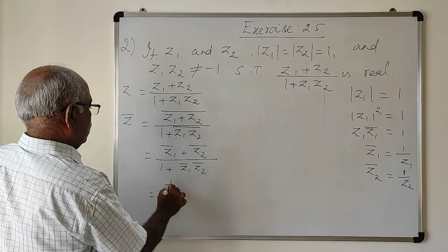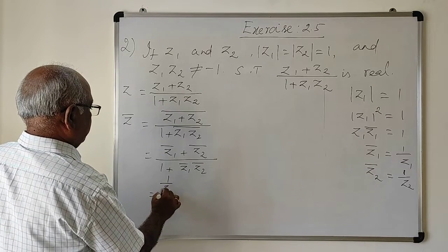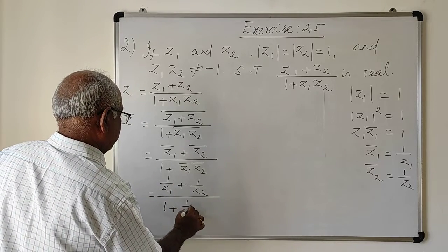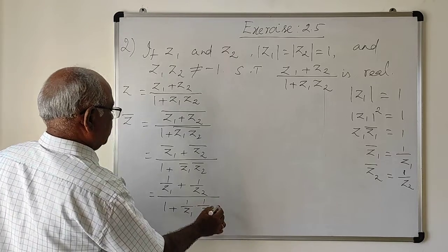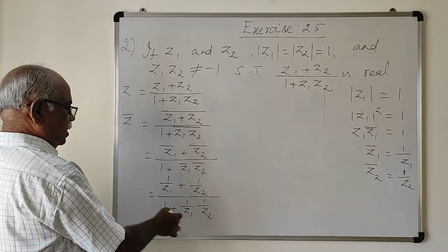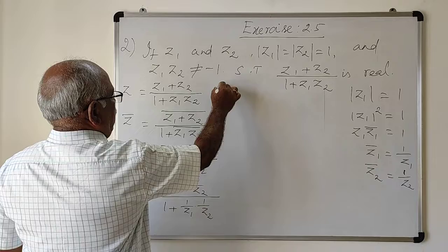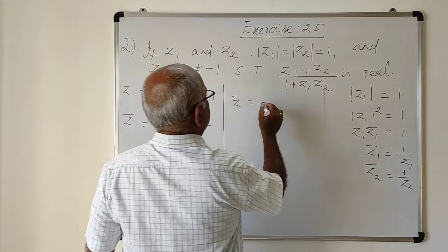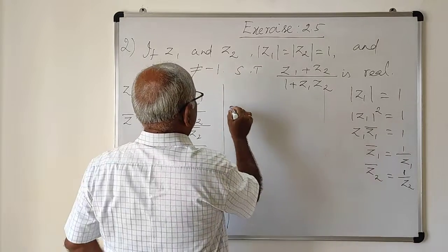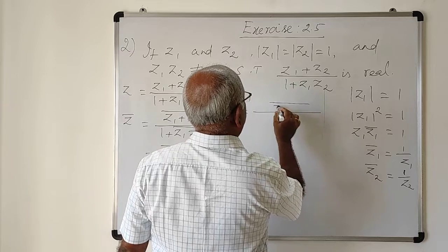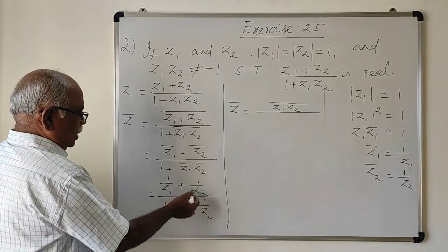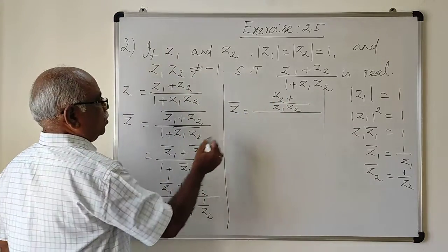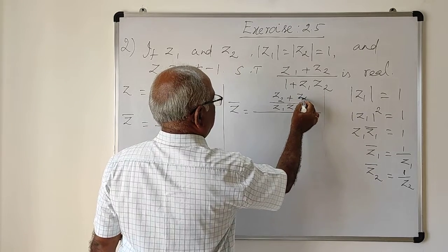Substituting Z1 bar equals 1 by Z1 and Z2 bar equals 1 by Z2, we get the numerator as 1/Z1 plus 1/Z2, divided by 1 plus 1/Z1 into 1/Z2. Taking LCM in the numerator, Z1 into Z2 is the common denominator, giving Z2 plus Z1. Similarly in the denominator, taking LCM gives Z1 into Z2 plus 1.